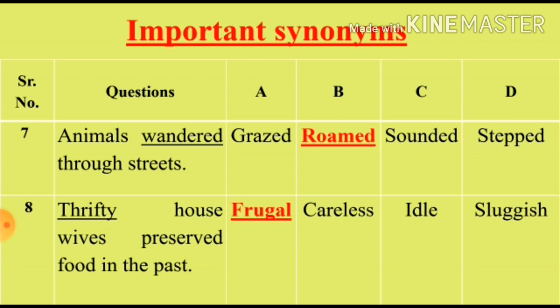Question 8: 'Thrifty housewives preserved food in the past.' We will see the synonym for the word 'thrifty'. Option A: Frugal (khafayatshwar). Option B: Careless (laparva). Option C: Idle (susth). Option D: Sluggish (susth). Options C and D are irrelevant. We will select from Option A and B. Option A is the right answer for Question 8.